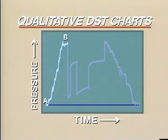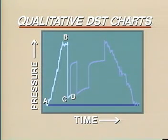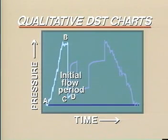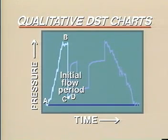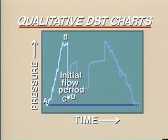The packer is then set. The tool is opened, B to C, and the initial flow period takes place from C to D. This period lasts for about 5 to 10 minutes. The initial pressure recorded at point C is usually near atmospheric unless a cushion has been placed in the drill pipe or a highly productive formation is being tested, and it reacts quicker than the recording instruments can record.